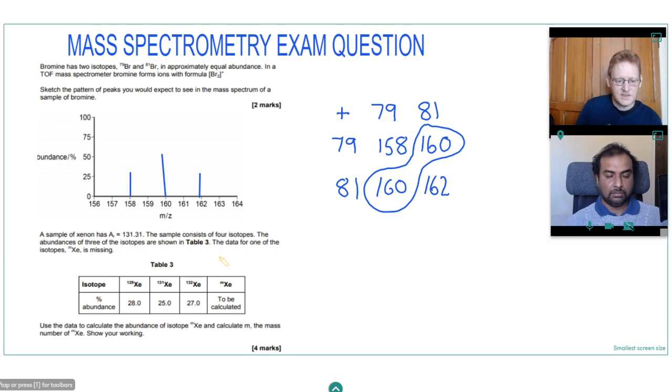And then the next part of our question says a sample of xenon with a relative atomic mass 131.31. And the sample consists of four isotopes. And the abundance of three of the isotopes are shown in Table 3. And the data for one of the xenon isotopes is missing. Use the data to calculate the abundance of the missing isotope and calculate n, the mass number of the missing isotope, and show your working.